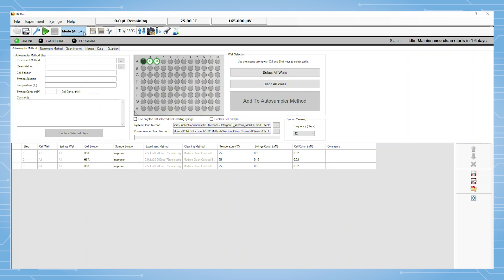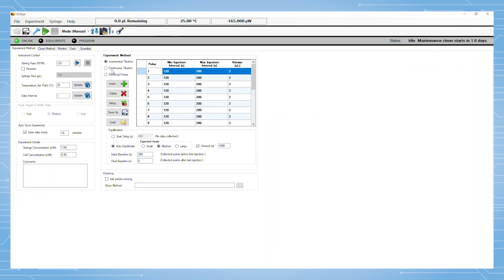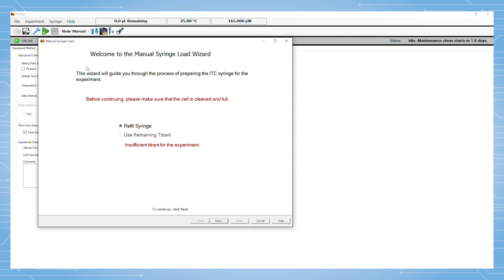The first step in loading the affinity syringe is to select manual mode if using an automated system. No action is needed for the semi-auto instrument. The green triangle or play button in the software is selected and a loading wizard is launched.